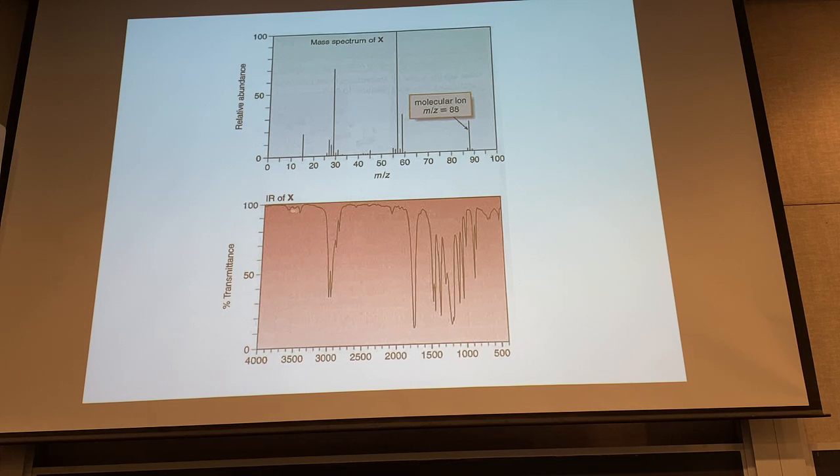And then the CH stretches right here. There's a couple of little things up here. You might be tempted to say it might be an amine, might have a nitrogen. Remember we looked at those NH stretches. But look, the mass spec is even. So what does that mean by the nitrogen rule? It either has no nitrogens or two or four nitrogens. Remember an odd number of nitrogens means the molecular ion will be odd. And notice the fragments here are odd.